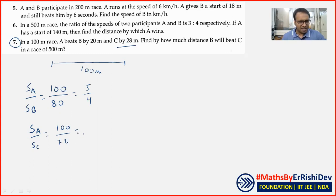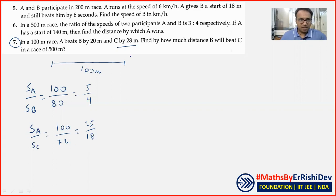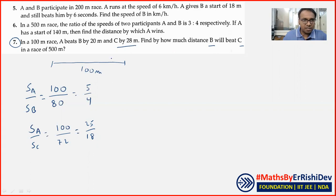Cancel کرتے ہیں — 25 اور forza cancel کیا، یہ 4 سے۔ تو SA/SB = 25/20 اور SB/SC = 25/18 آگیا۔ یہ ہمارے پاس ratio of speeds آگئے — SA upon SB اور SB upon SC۔ By how much distance will B beat C in a 500 metre race?